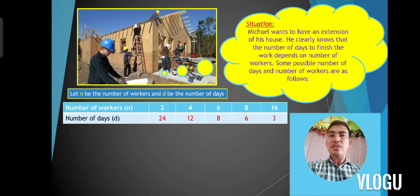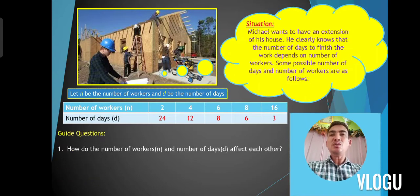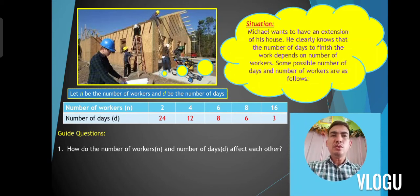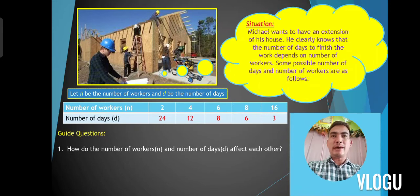Let us be guided with this question: How do the number of workers and the number of days affect each other? Have you noticed something with regards to the number of workers going from 2 to 16 and the number of days going from 24 down to 3? As the number of workers increases from 2 to 16, the number of days decreases from 24 to 3. So, as the number of workers increases, the number of days decreases.